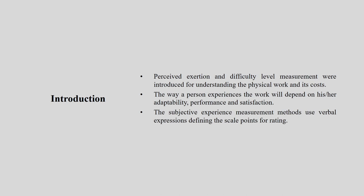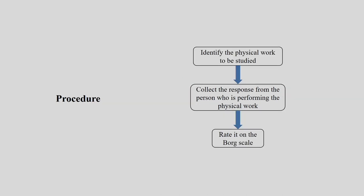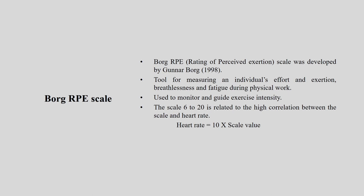We have two different Borg scales to describe. The procedure is: first, identify the physical work to be studied; then collect responses from the person performing the physical work and rate that into the Borg scale. First we will discuss the Borg RPE scale — RPE means Rate of Perceived Exertion — how much the worker is perceiving about that particular exertion.